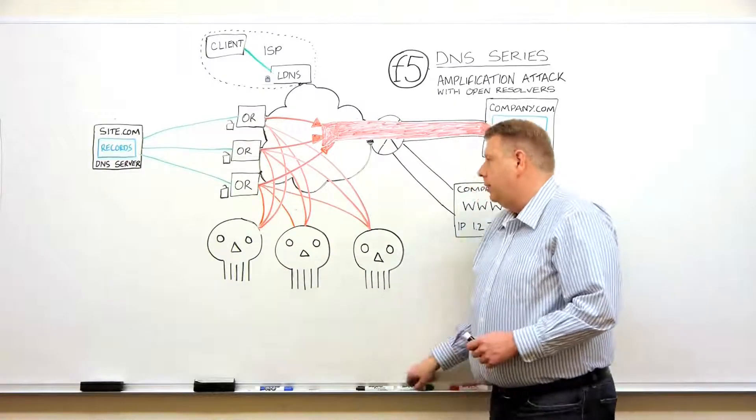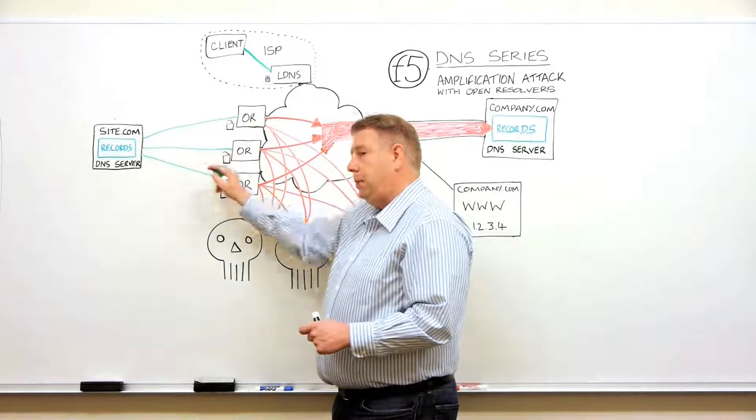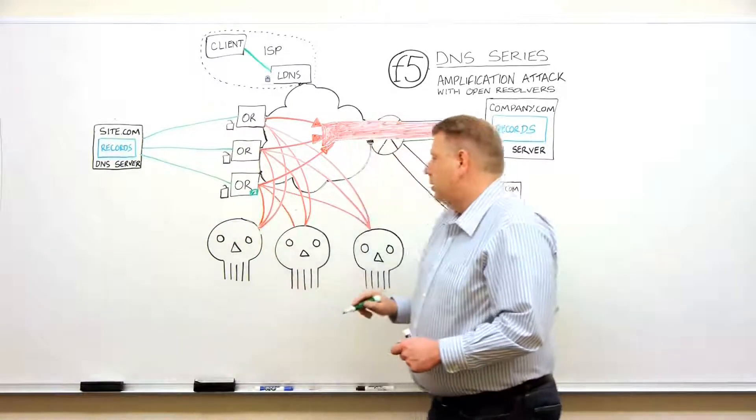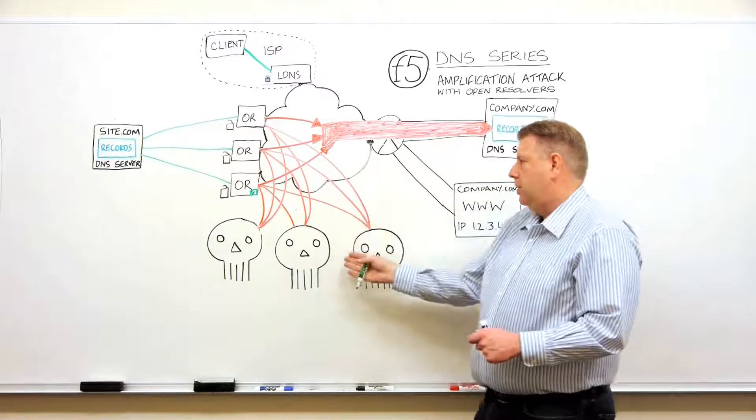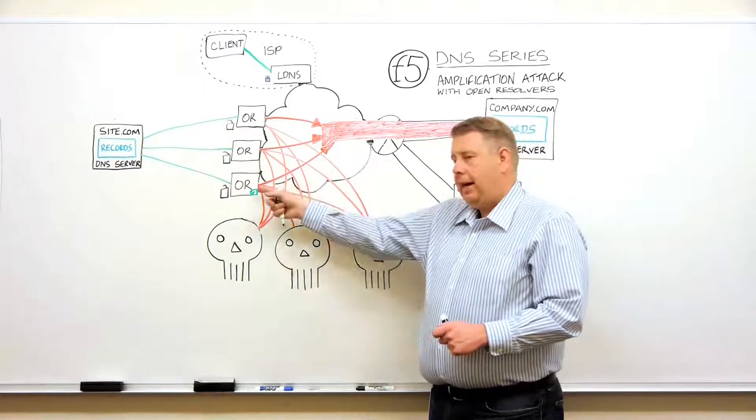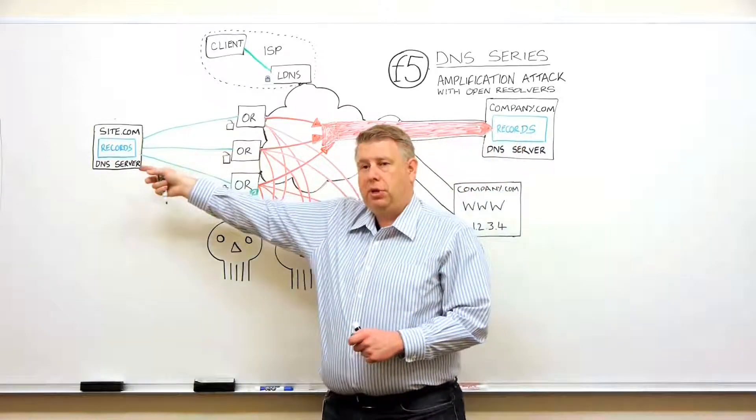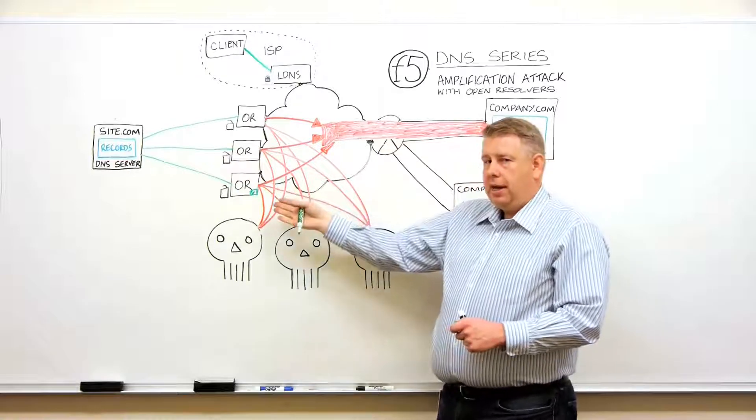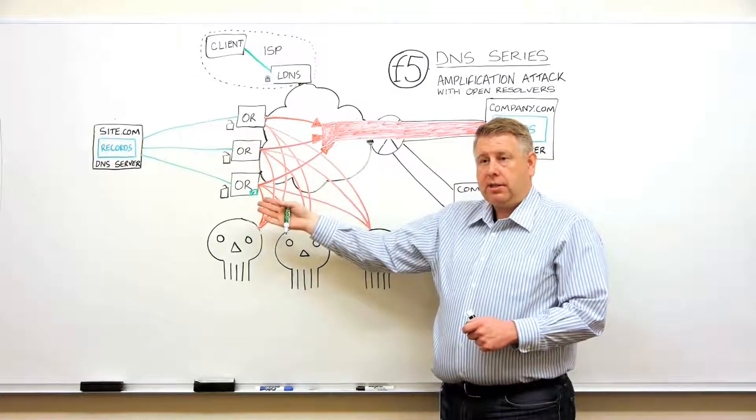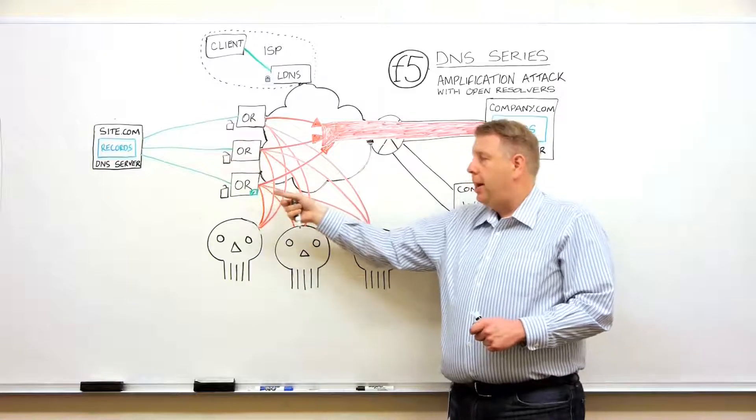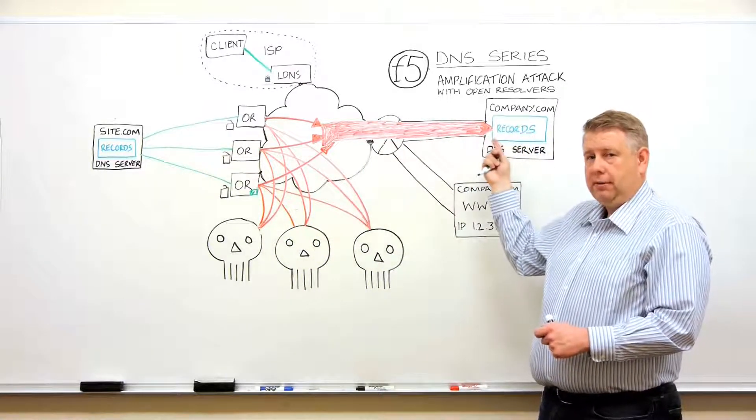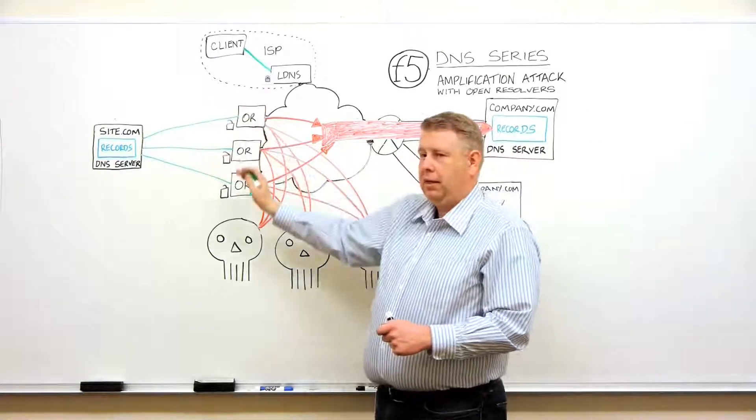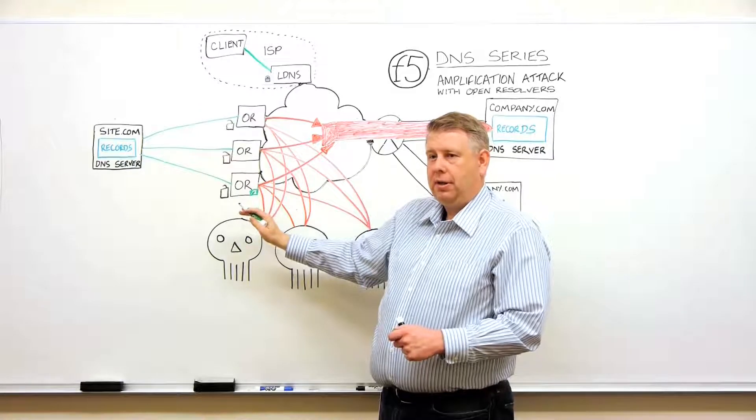So now, this open resolver not only has gone out and done what appears to be a legitimate DNS query, but they've also put it in its cache. So the next time the attacker sends the request to this open resolver, it can just answer. It doesn't have to go back to the original site. It can answer out of its own cache. But again, if we give it the incorrect return address, now it's going to send that cache response to the target site and fill up the bandwidth.